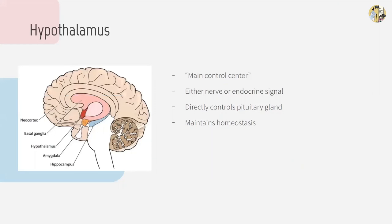Next, we're going to talk about important hormones and where they are released from. The hypothalamus receives signals and acts appropriately by sending out nervous or endocrine signals. It directly controls the pituitary gland — in fact, the posterior pituitary gland is connected to the hypothalamus almost as an extension. The hypothalamus is essentially the main control center that regulates the body and works to maintain homeostasis, controlling most other hormones.